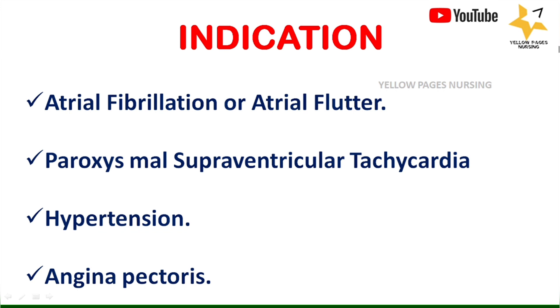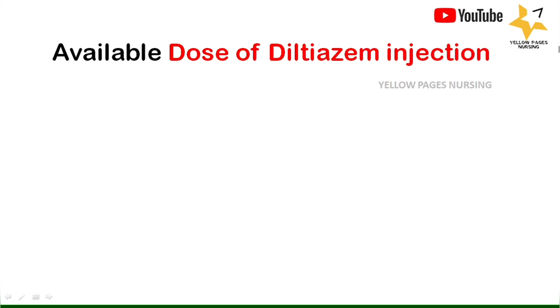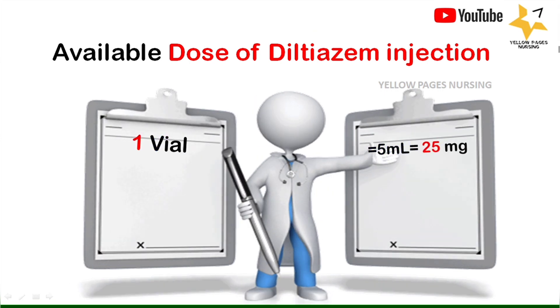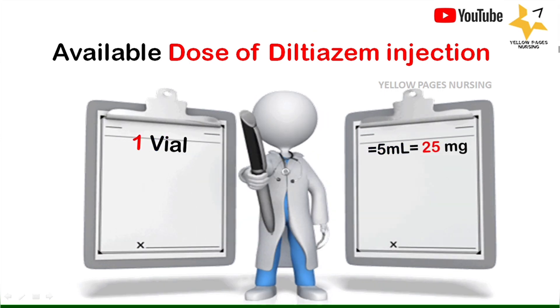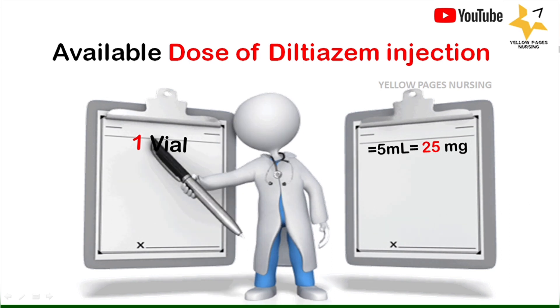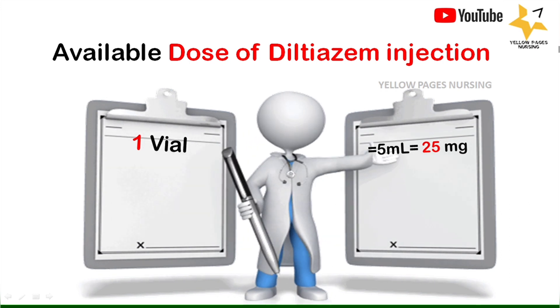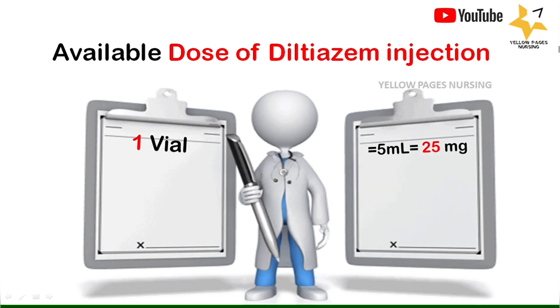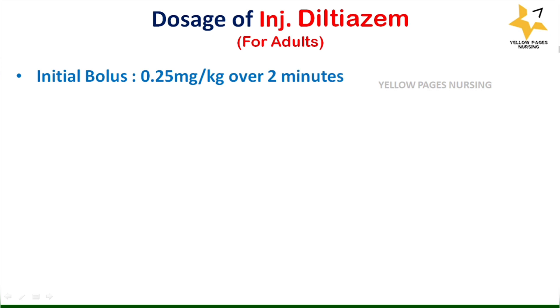Diltiazem is also indicated for angina pectoris. How is the drug available? It comes in vial form, with one vial containing 5 ml with 25 milligrams of strength. Let's discuss the dosage of injection diltiazem for adults: the initial bolus is 0.25 mg per kg over 2 minutes.